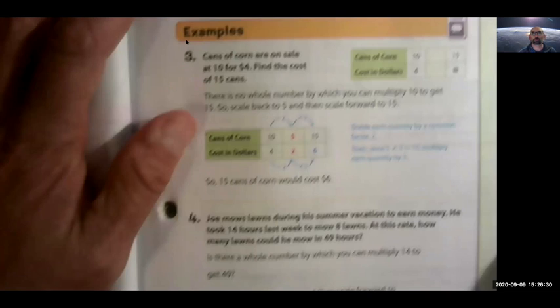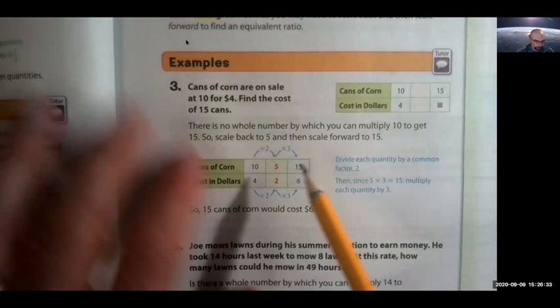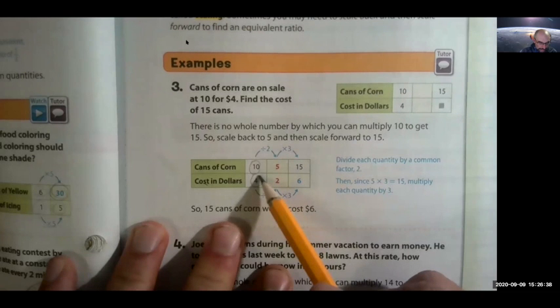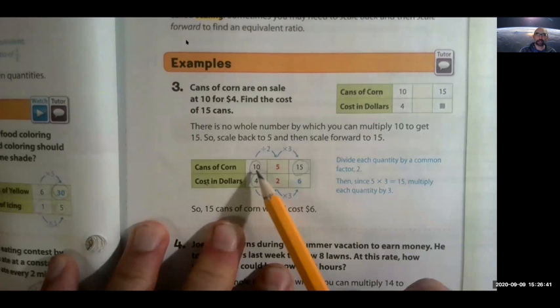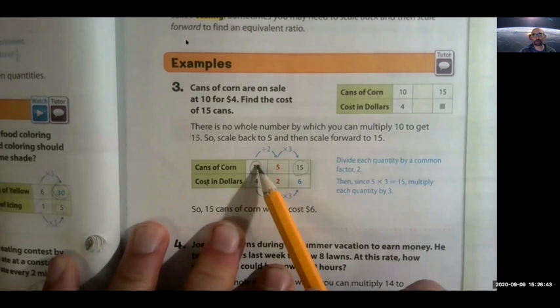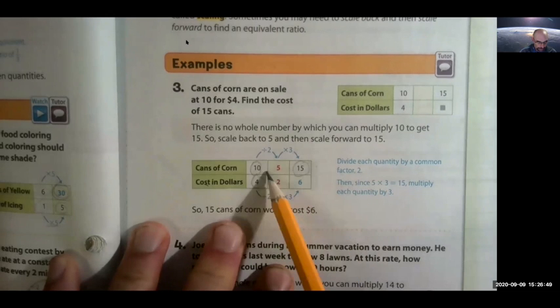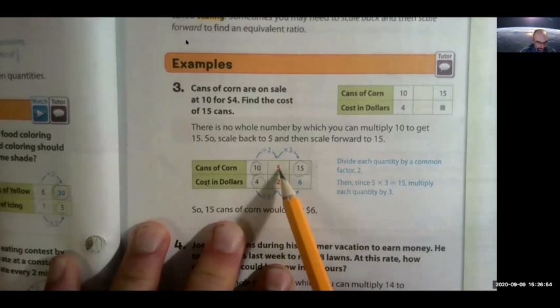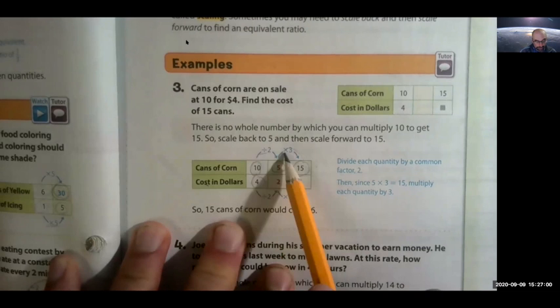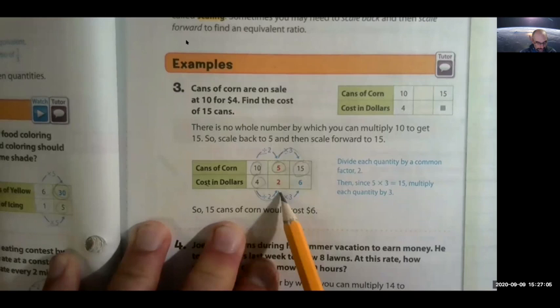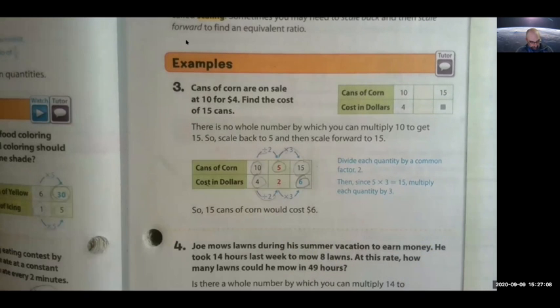Let's go look on the next page. So this is what we were doing before with scaling. Where if you look at this example, they have 10 cans of corn cost four dollars. How much were 15 cans of corn? Well, there's not any one operation that you can do to say 10 times something is 15 or 10 divided by something is 15. So what they do here is first you divide it. So 10 divided by two is five. And because now I know five, I can do five times three is 15. So if I do divide by two times three, I have to do the same on the bottom. Four divided by two is two. Two times three is six. So therefore six is your answer to that one. Got it?